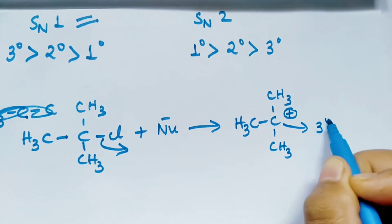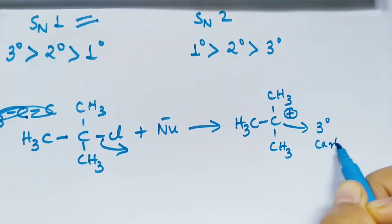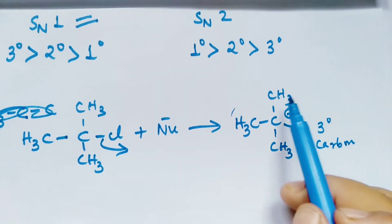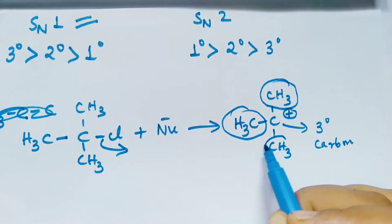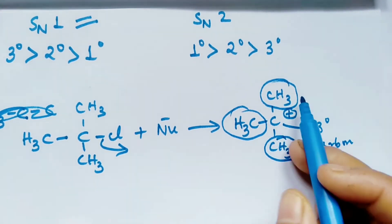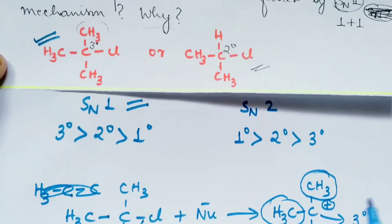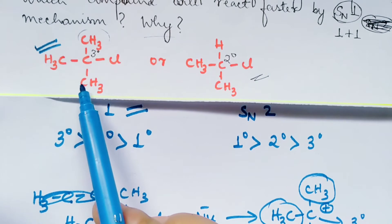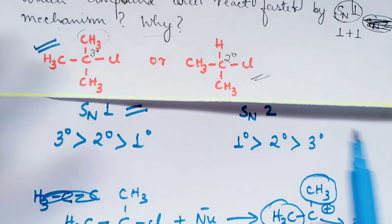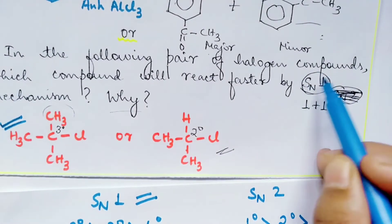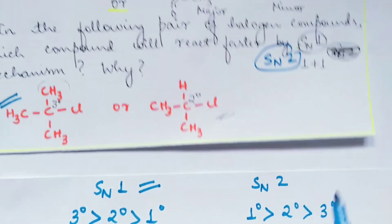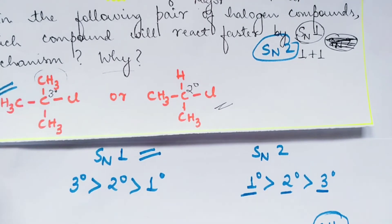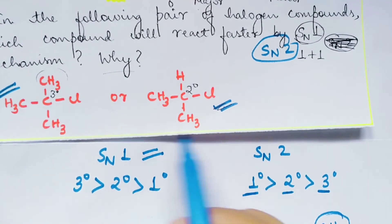The tertiary carbocation is more stable because the three methyl groups are electron-donating and donate electrons to the positive carbon. That's why tertiary butyl chloride reacts faster by SN1 than the secondary compound. If they ask about SN2 mechanism, the secondary compound would react faster, since for SN2 the order is primary > secondary > tertiary.